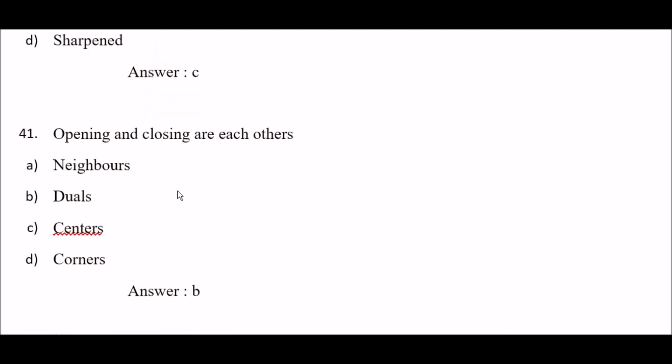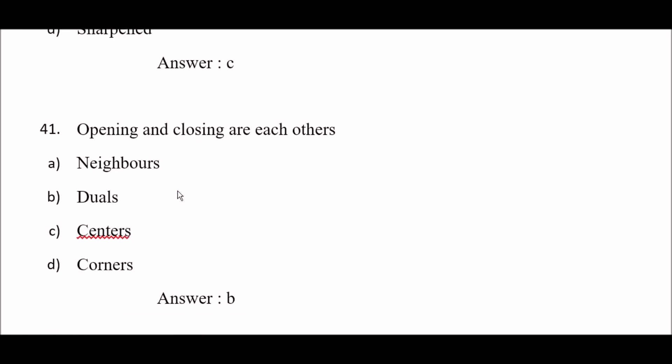Next question: opening and closing are each other's — option A: neighbors, option B: duals, option C: centers, option D: corners. The right answer is option B — duals.